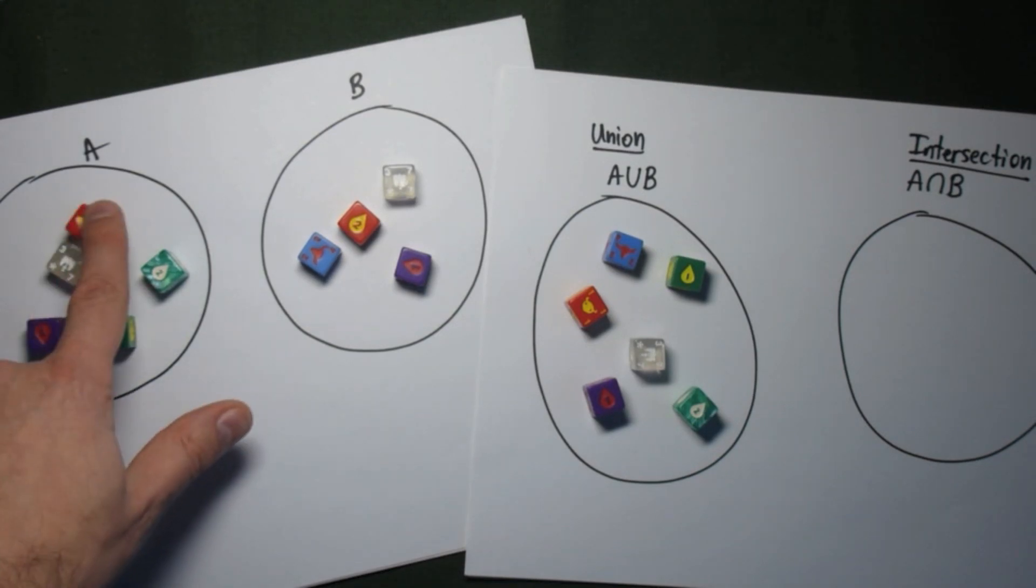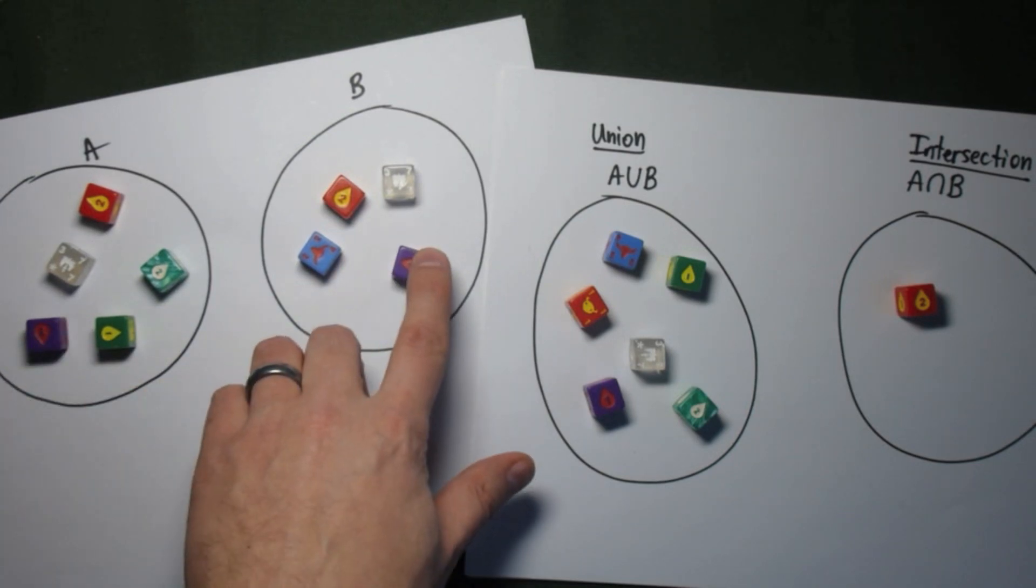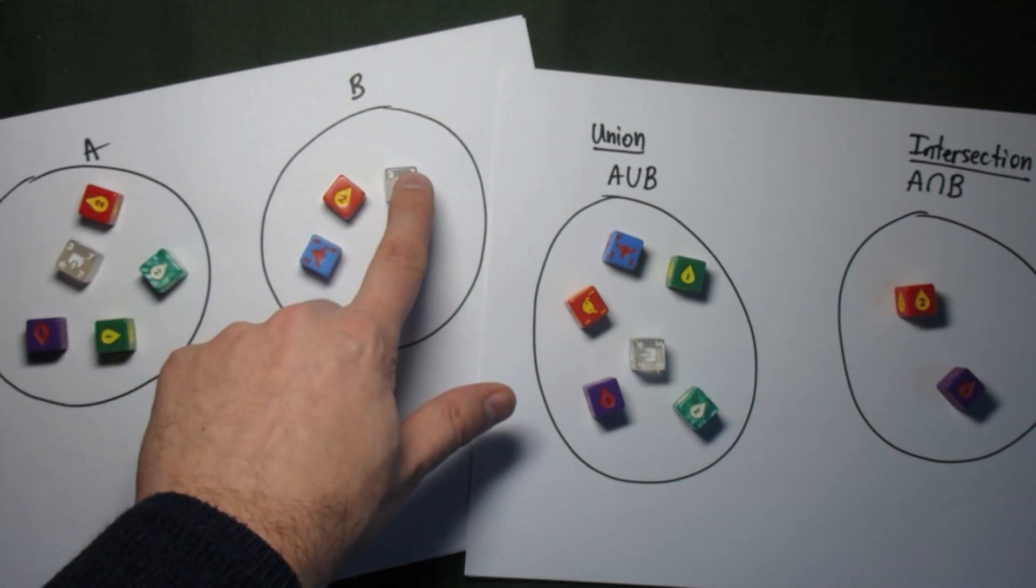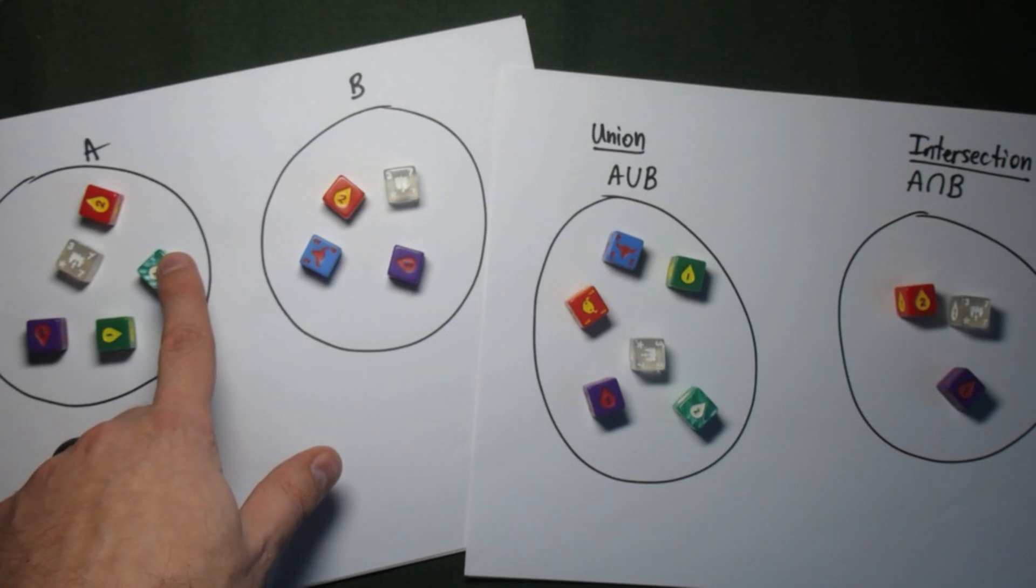For the intersection, we have to take a look and see what's in both of the sets. It can't just be in one. So the red die is in both sets. The purple die is in both sets. The green die is only in A, so it's not in the intersection. The clear die is in both sets, but none of the other dice appear in both sets: the green, the marble, or the blue.